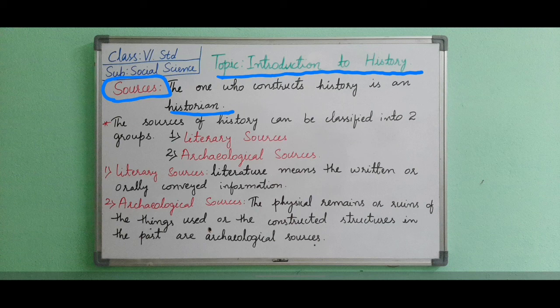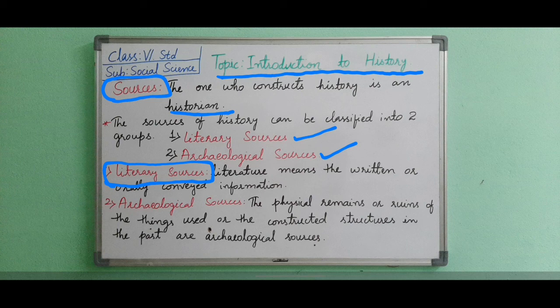The sources of history can be classified into two groups: the first one is literary sources, and the second is archaeological sources. Historically speaking, literary sources means the written or orally conveyed information — whatever things we find in oral form and in written form such as books and magazines are called literary sources.